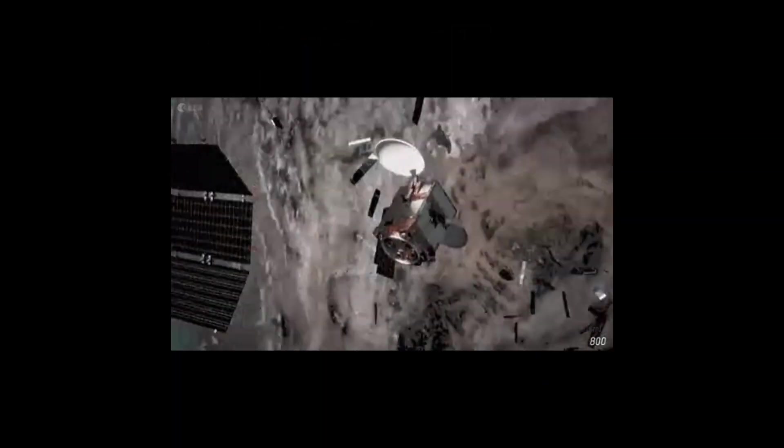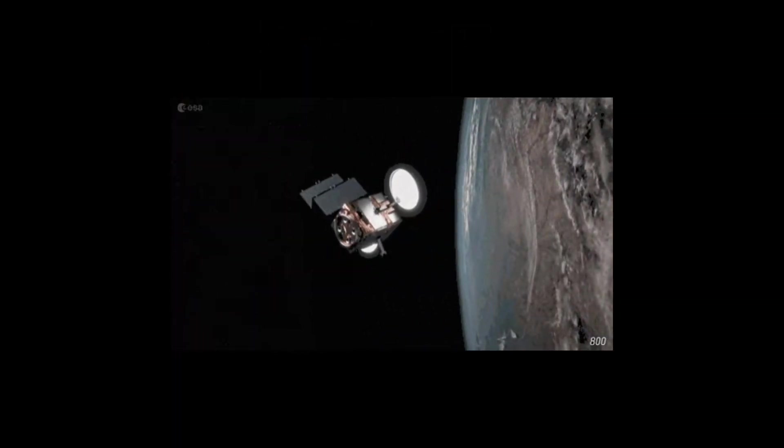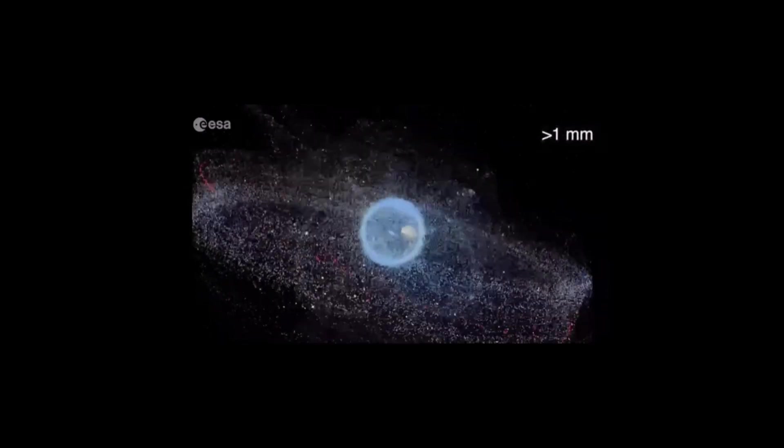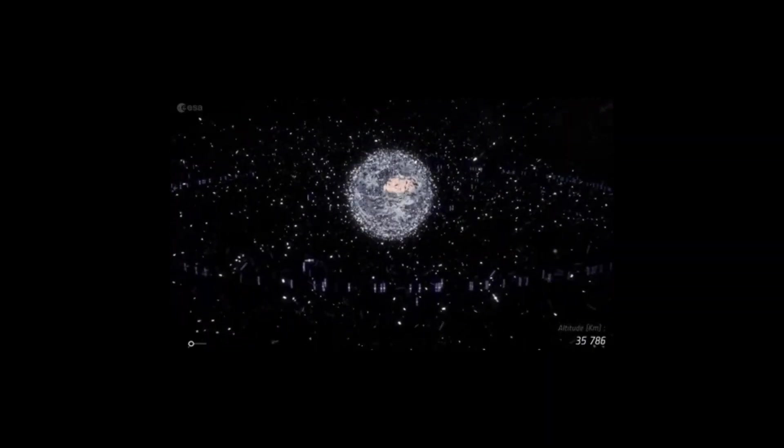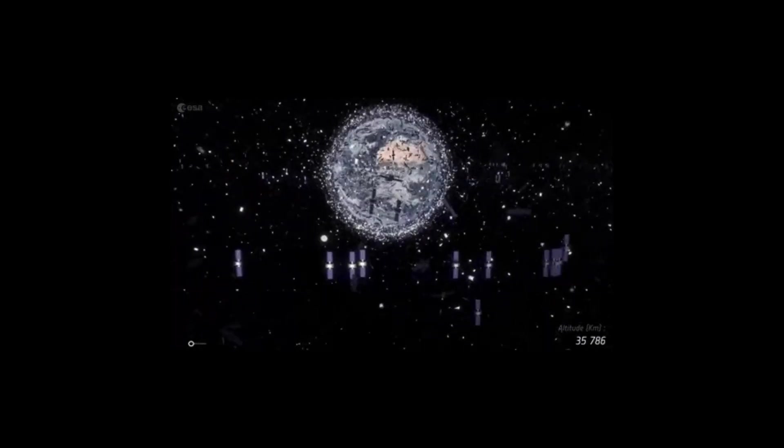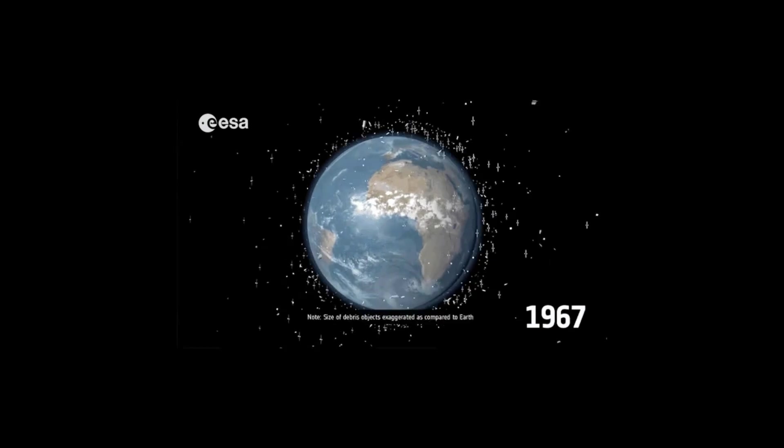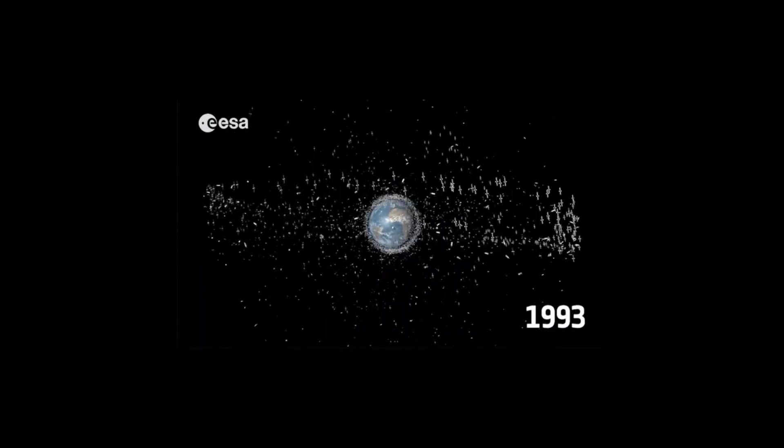Based on statistical models produced by ESA's Space Debris Office, it is estimated that there are 36,500 objects larger than 10 centimeters, 1 million objects between 1 to 10 centimeters, and 130 million objects between 1 millimeter to 1 centimeter, all orbiting Earth.